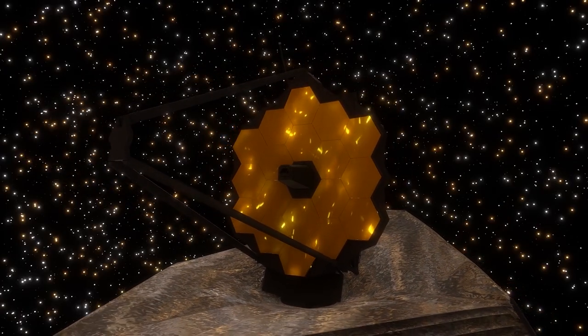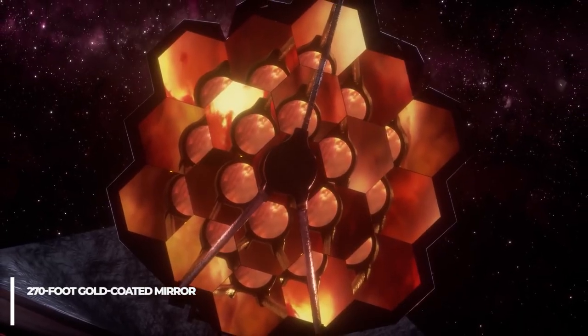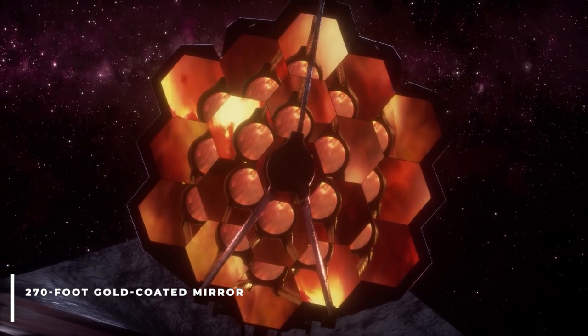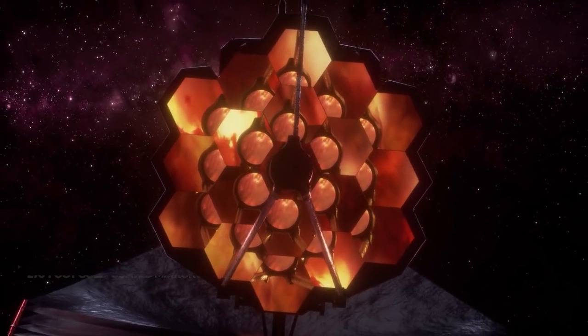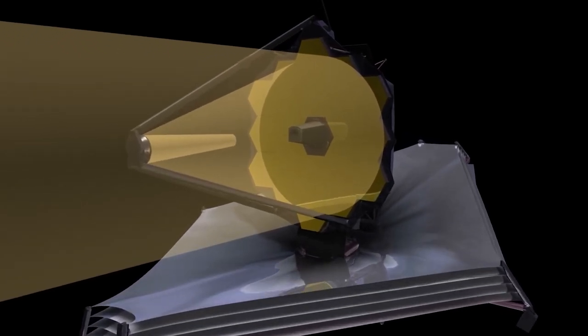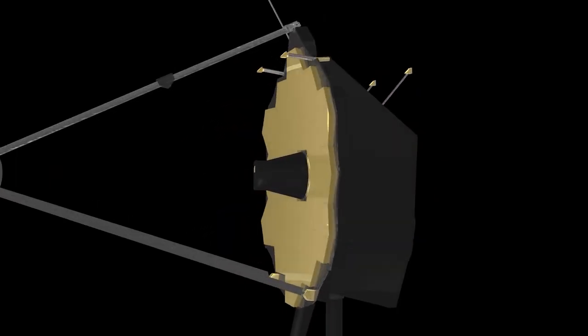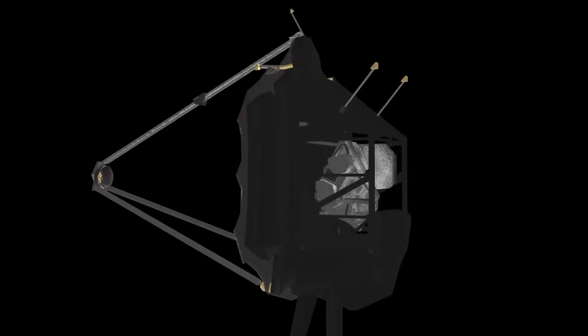The incredibly accurate detail and clarity of these measurements are possible because of Webb's state-of-the-art design. Its 270-foot gold-coated mirror collects infrared light efficiently, its precision spectrographs spread light out in rainbows of thousands of infrared colors.